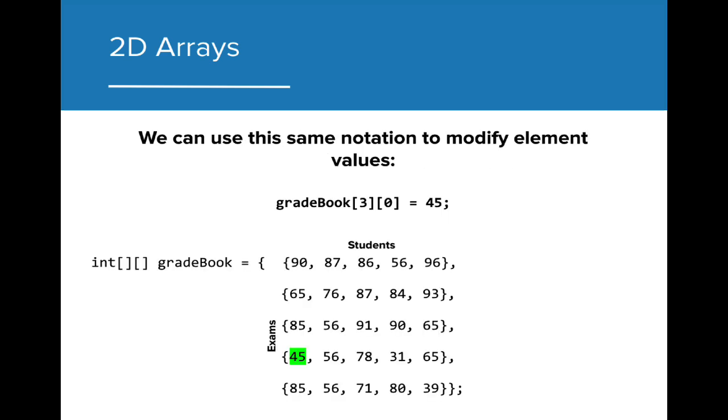We can use this same notation to modify the value of elements in a 2D array. In this instance, we are changing index 0 in the array located in index 3 of the 2D array to 45. We can see that change reflected here.